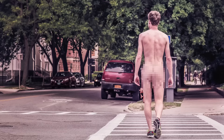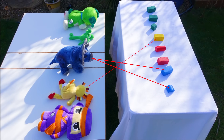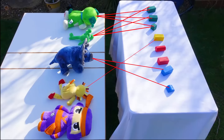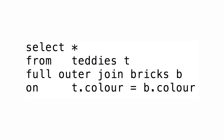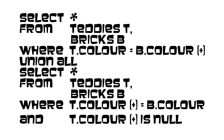But what if you want all the bricks and teddies from each table, even if there's no matching color in the other? To do this, you need a full outer join. This returns all the rows from both tables. But unlike a Cartesian product, each teddy only links to bricks of the same color. If there are no color matches in the other table, the teddy or brick appears just once. To do a full outer join, you need to use ANSI syntax, or go for a clunky workaround.